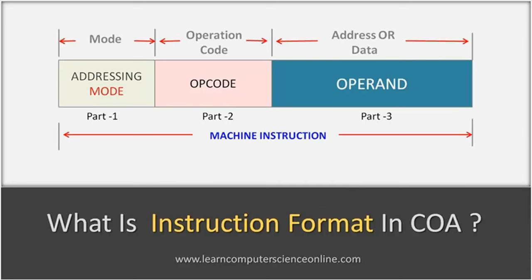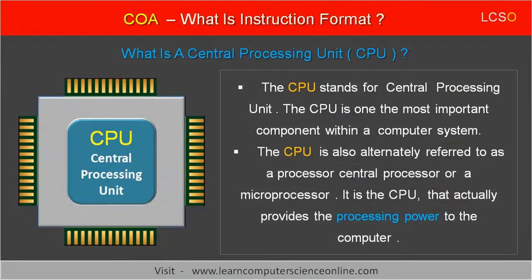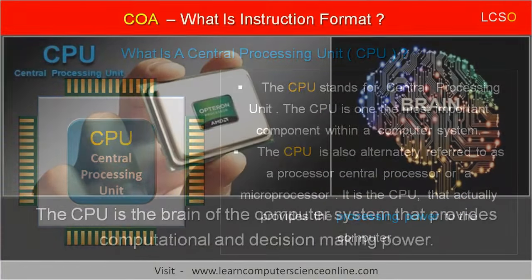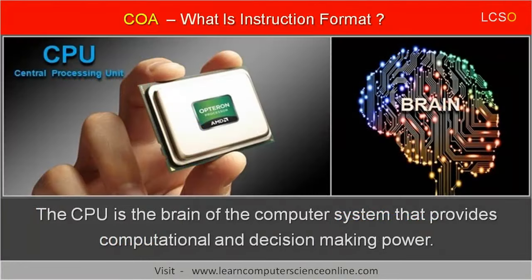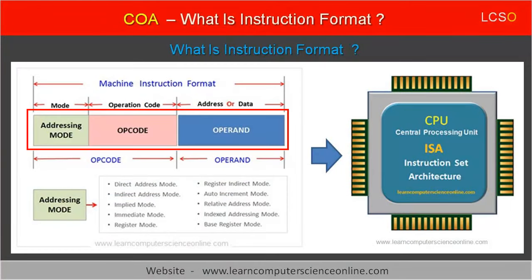Let us now move on to another important concept in computer architecture. The next concept is what is instruction format. The concept of instruction format is related to how the computer processor, CPU, decodes and executes the program machine instructions. The CPU, which stands for central processing unit, is the brain of the computer system, providing processing power and controlling all operations performed by the computer system, including the activities necessary to execute the program. The CPU decodes and executes the program machine instructions based on the instruction format.